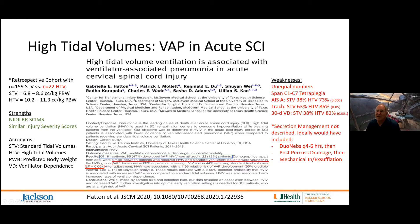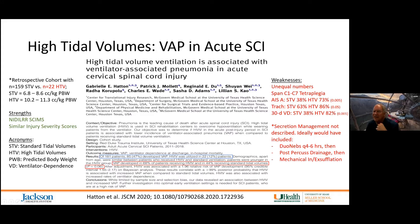The study included individuals from C1 to C7 tetraplegia. Among the high tidal volume group, 73% had AIS-A complete spinal cord injury and 86% had trachs. There were significant issues with how the study was constructed, and they didn't describe secretion management — ideally including duonebs every four to six hours, postural percussion and drainage, and mechanical insufflation-exsufflation.